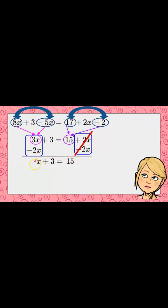Now I'm going to isolate that variable term by using inverse operations. The inverse of add 3 is subtract 3, so I subtract 3 from both sides, and I have x because this is a zero pair. 15 subtract 3 is 12.